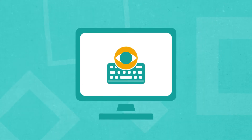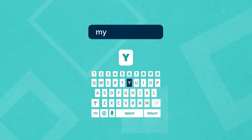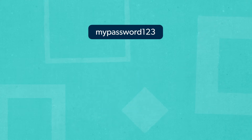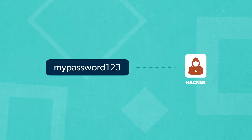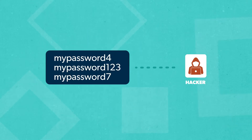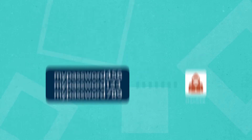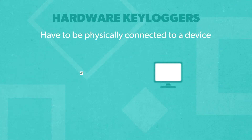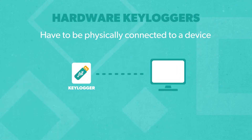Keyloggers are first installed on a target device, then they start recording keystrokes and capturing data. They then transmit the data to hackers or store it until it's retrieved.